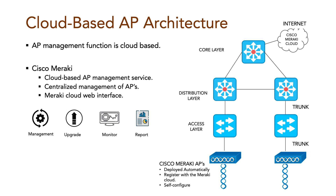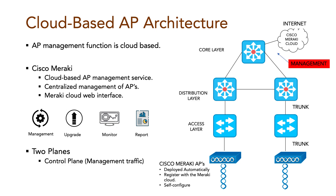It consists of two distinct paths: a control plane for management traffic, used to control, configure, manage, and monitor the access point itself; and a data plane for data traffic, which is used for end-user traffic passing through the access point. Data traffic to and from wireless clients does not have to travel up into the cloud and back — the cloud is only used to bring the management functions into the data plane.